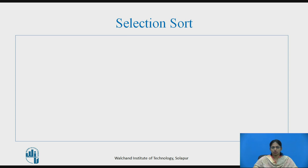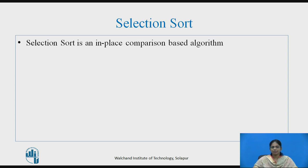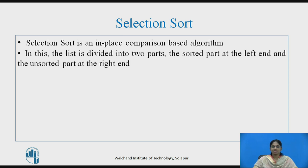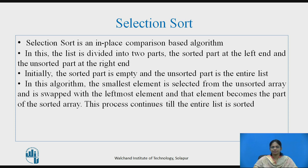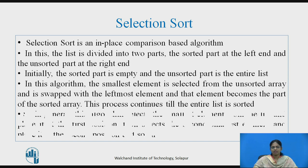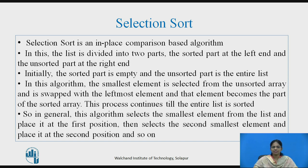Let us see what Selection Sort is. Selection Sort is an in-place comparison based algorithm. In this, the list is divided into two parts: the sorted part at the left end and the unsorted part at the right end. Initially, the sorted part is empty and the unsorted part is the entire list. The smallest element is selected from the unsorted array and is swapped with the leftmost element, and that element becomes part of the sorted array. This process continues till the entire list is sorted. In general, this algorithm selects the smallest element from the list, places it at the first position, then selects the second smallest and places it at the second position, and so on till the entire list is sorted.